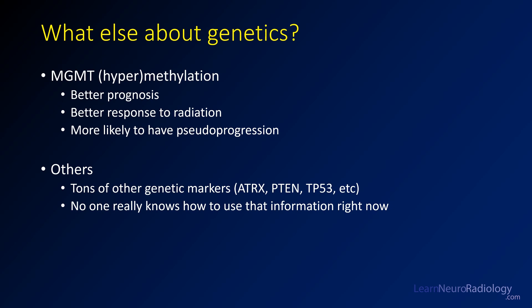Regarding other genetic markers for gliomas: MGMT hypermethylation confers a better prognosis, better response to radiation, and a higher likelihood of pseudoprogression. There are a number of other markers associated with these tumors, but in realistic practice no one is really able to use that information right now — it's used for classification purposes, but we don't yet know how to guide treatment with it.